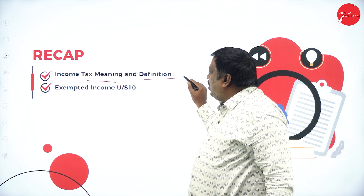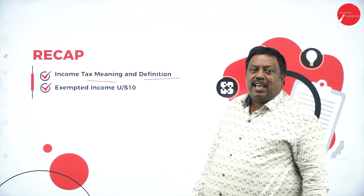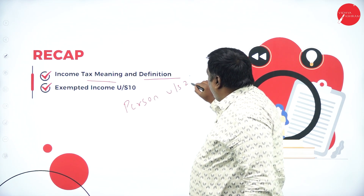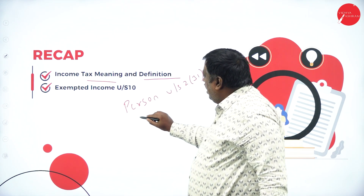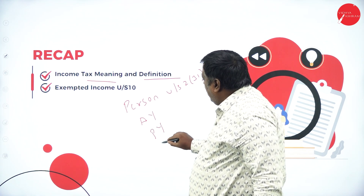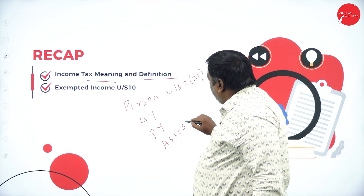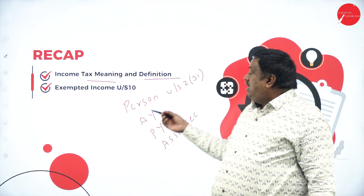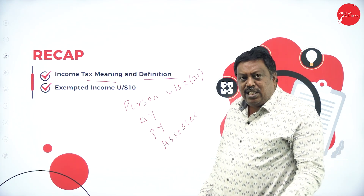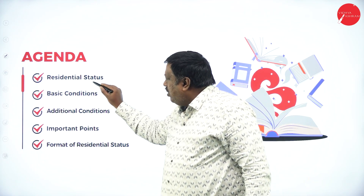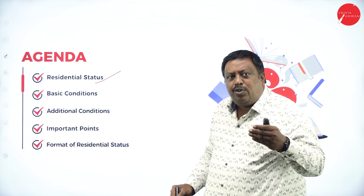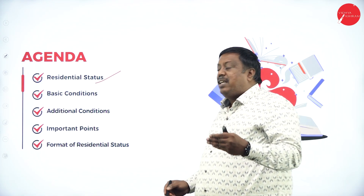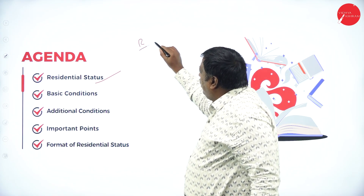In the previous session we discussed about what is income, what is tax, and definitions related to certain important points like person under Section 2 sub-clause 31, assessment year, previous year, and assessee. These are the important terms discussed in our previous session. In today's agenda we are going to discuss about residential status.